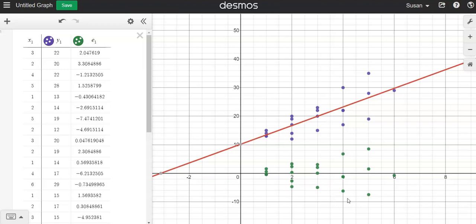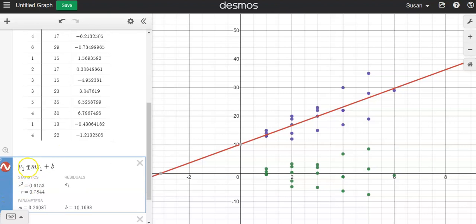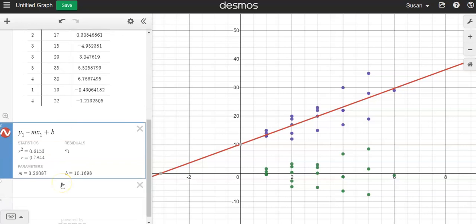So that's a quick run through of how to plot points. You just copy and paste your data in if you've already made it in a spreadsheet. You click on the next row and type y1 and then your tilde and then m x1 plus b, and it'll automatically create your line of best fit with your slope and your y-intercept.